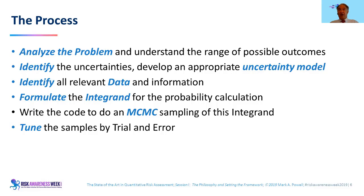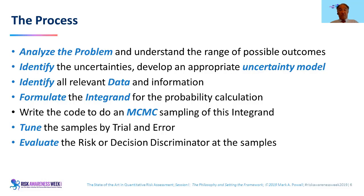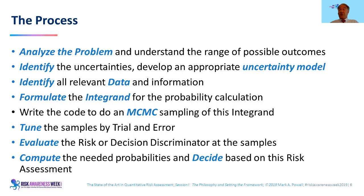You'll need to tune the Markov chain, look for burn-in to get a stationary set of statistics, using the acceptance ratio and checking visually whether the scatter looks like noise. Then evaluate the risk or decision discriminator at all those samples to get the uncertainty space. Using Monte Carlo calculations, compute the needed probabilities from those samples — whether from a built-in sampler or Markov chain — and decide based on the risk assessment. That's literally the process, and most of what you need to do applies whether you're doing a state-of-the-art QRA or not.